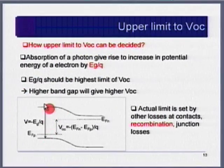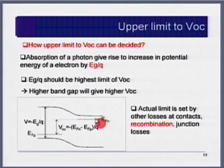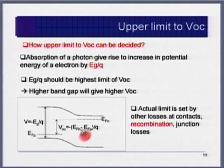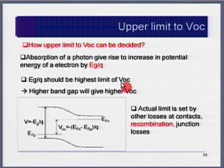Higher band gap means higher VOC. The practical maximum VOC comes from the difference between the quasi-Fermi levels on the n-side and p-side divided by Q. The upper upper limit is band gap divided by Q — the band gap expressed in voltage. If light intensity increases, VOC increases as a log function of the light-generated current.